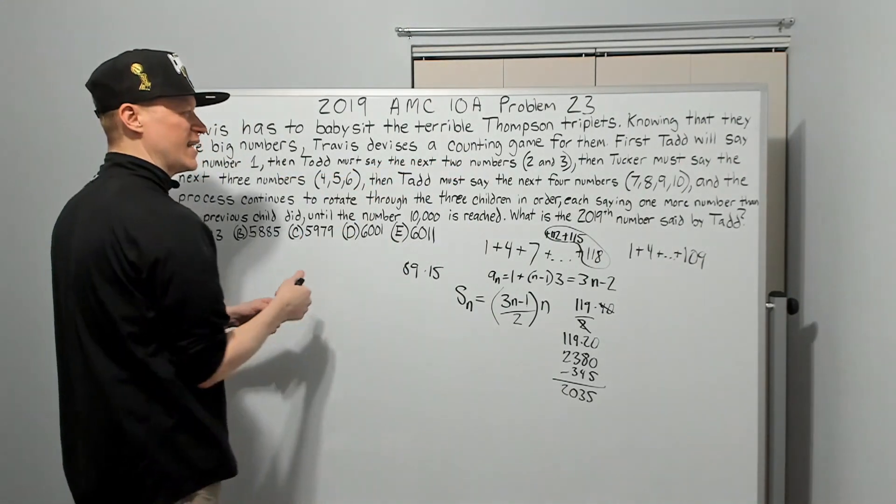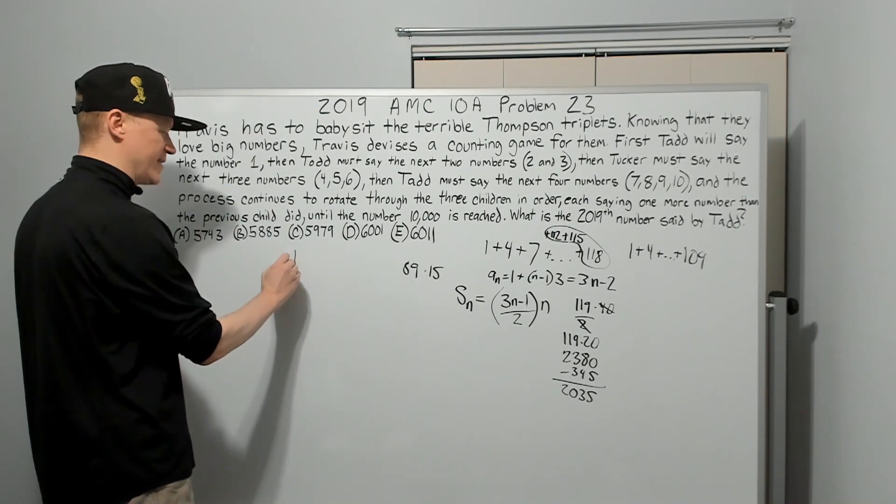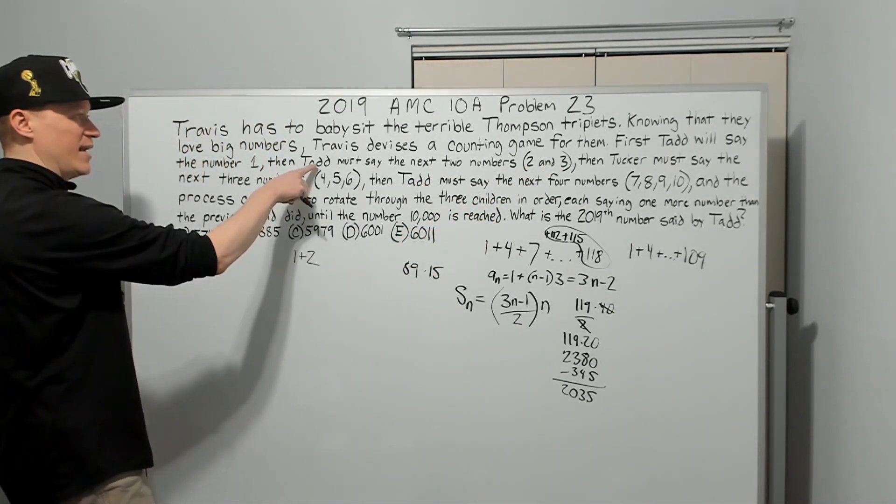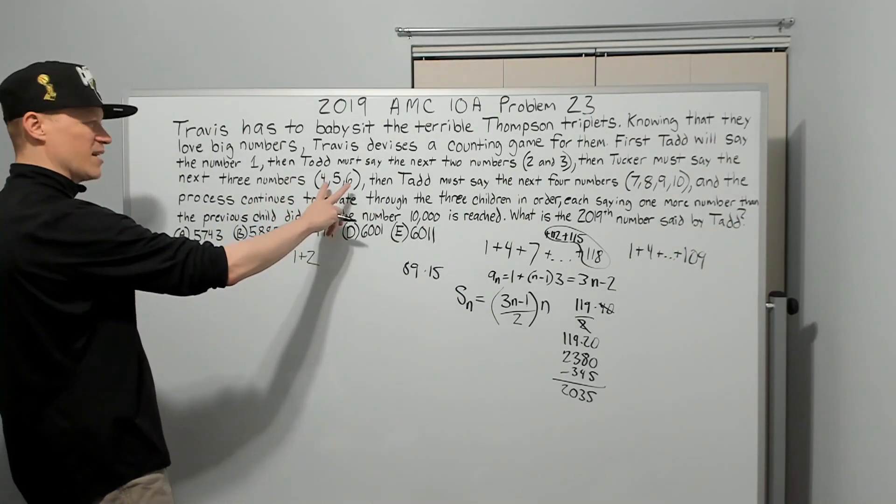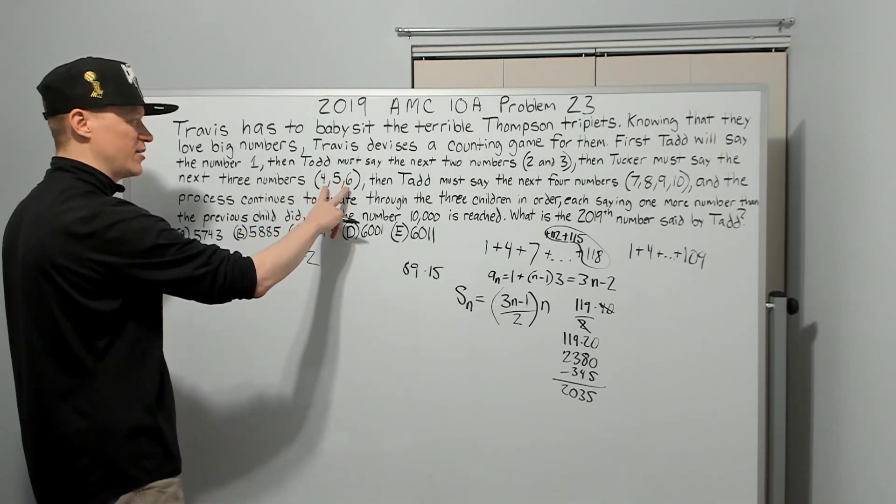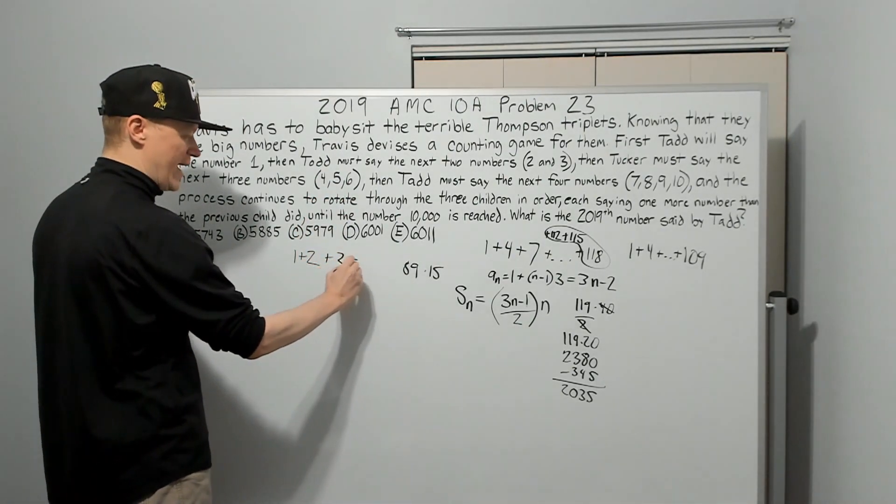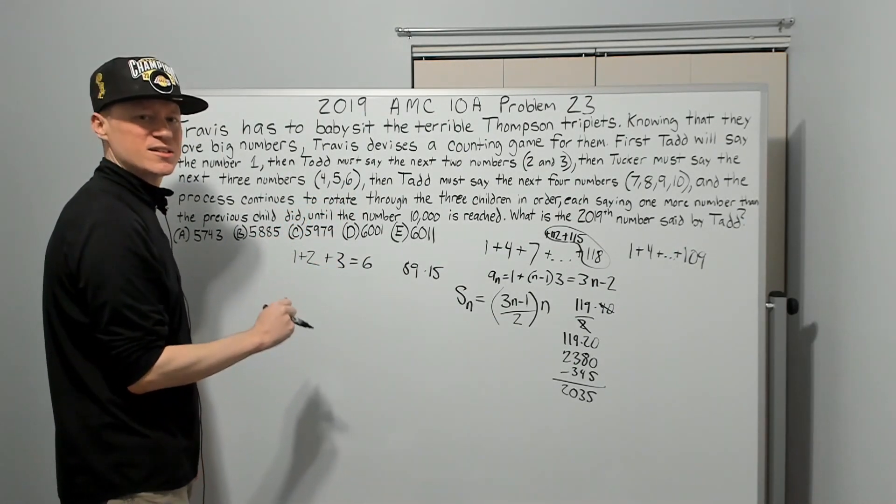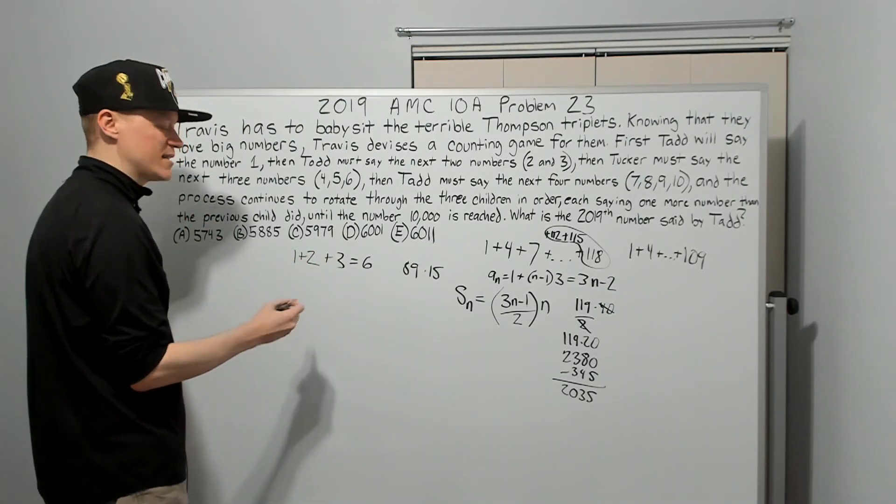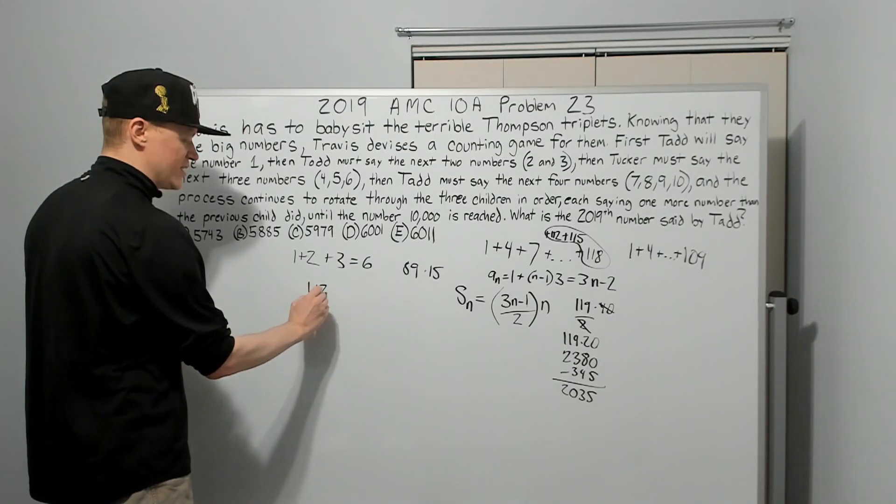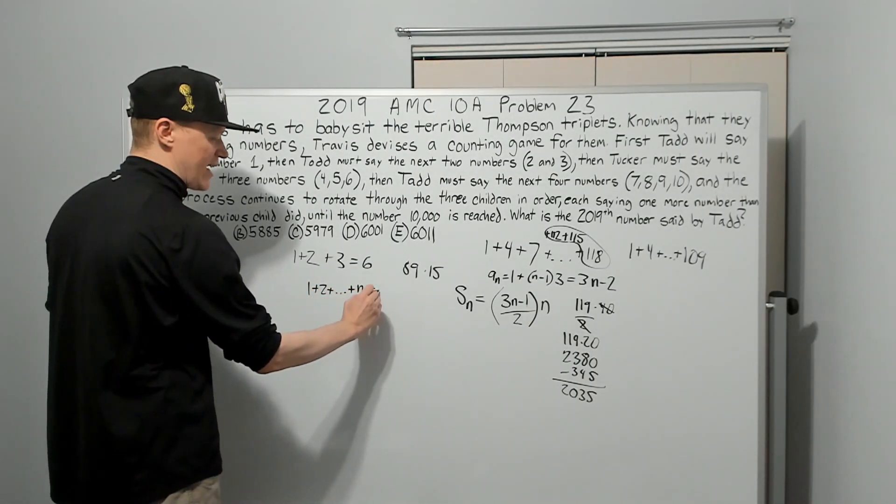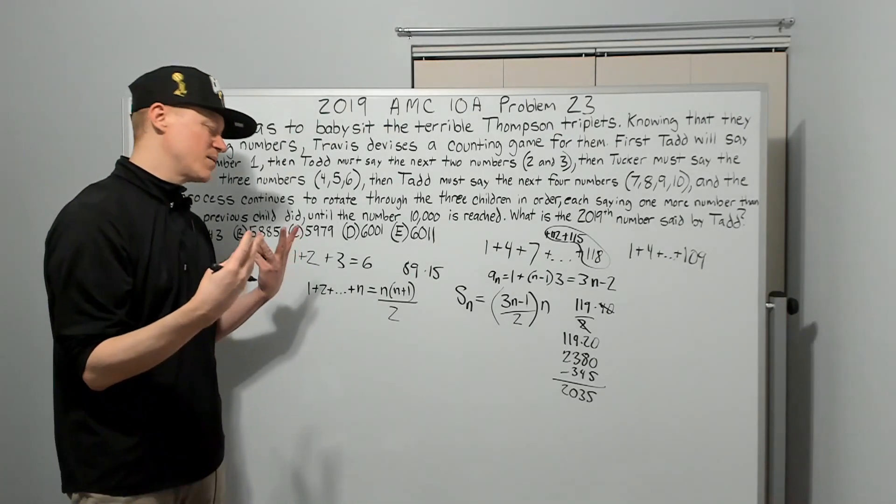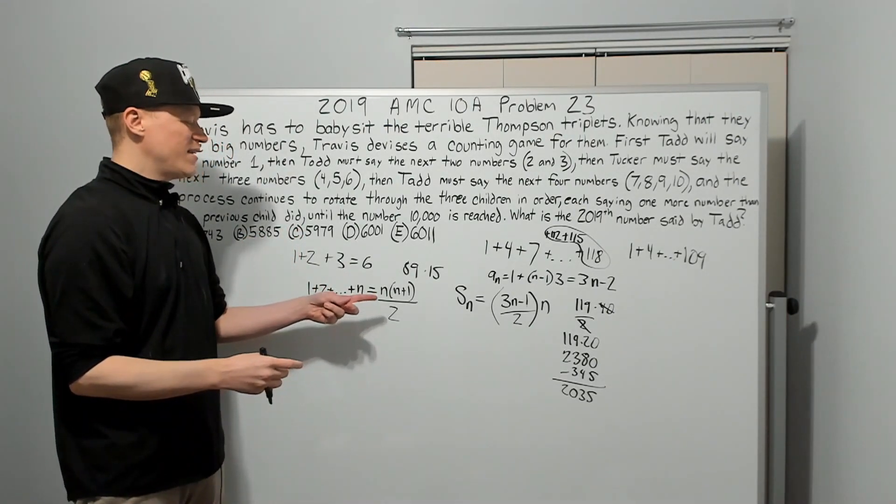He said 1, then he said 2. How many total numbers were said at that point? It would be 1 plus 2 numbers, which is 3. Notice that's the last number said by Todd when he went. The next person, Tucker, right? Does it matter? They're all vowels that come after the letter T. He says 3 numbers. And when you add that up, you get 6. Notice that's his last number. These, of course, are the familiar triangular numbers. It's also a pretty standard arithmetic series. I prefer to think of them as the triangular numbers. Of course, 1 plus 2 plus dot dot dot plus n is actually n times n plus 1 over 2. It's good to memorize.